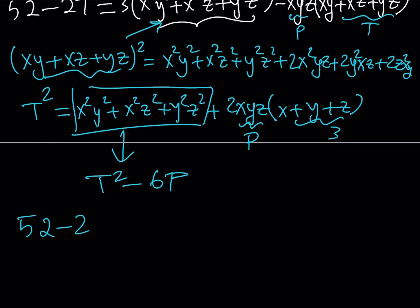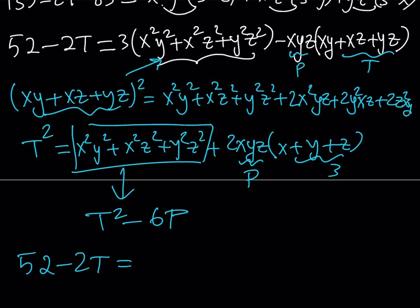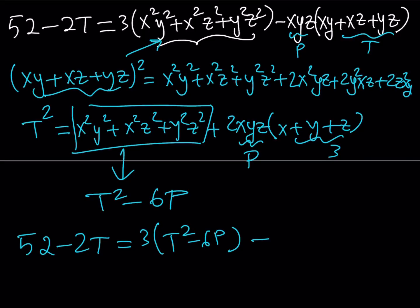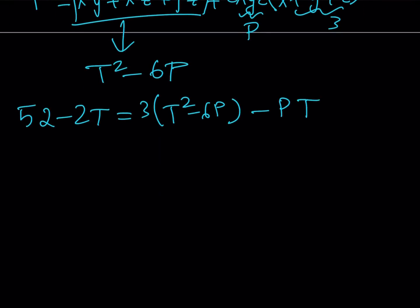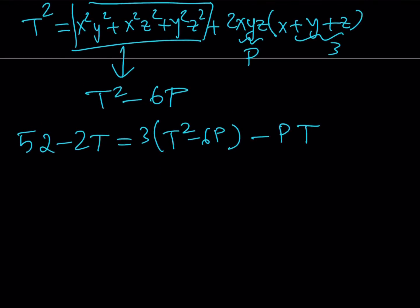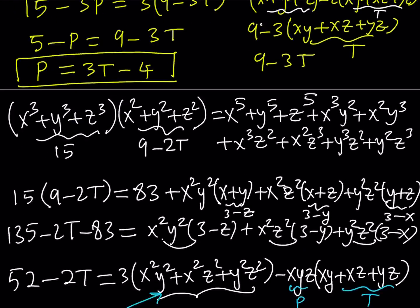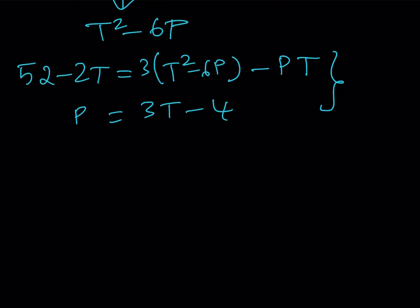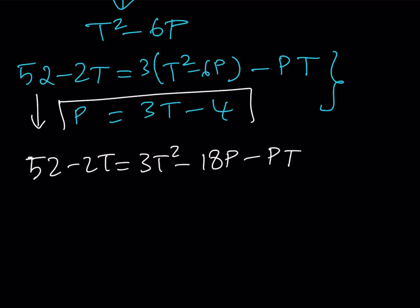This gives us 52 minus 2t equals 3 times (t squared minus 6p) minus pt. So we got the following equation. We also have the other equation we derived: p equals 3t minus 4. This is our system and we're going to solve it. Let's simplify the top equation and replace p with 3t minus 4.